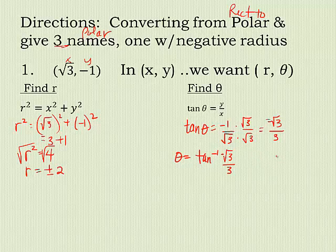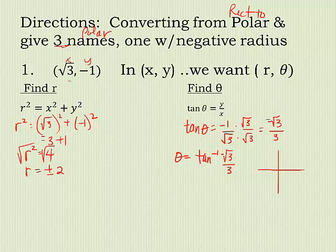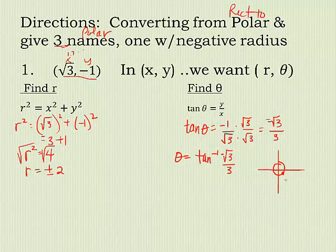Alright, so let's think about this. If you graph this point, if I go back to the original point, square root of 3 is like 1.7 something something something. It's positive. And negative 1. So that point is somewhere around over here. So I know this angle is down in here.